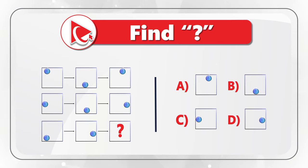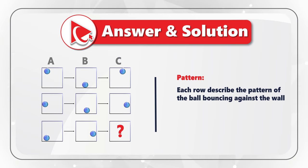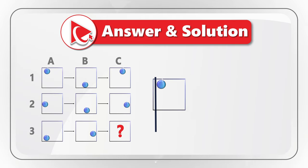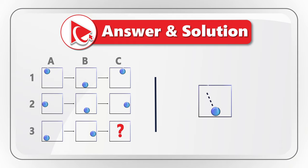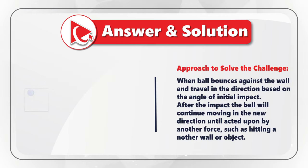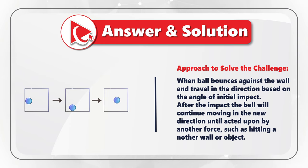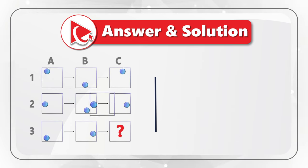To better solve this challenge, let's assign columns and rows to each object in the picture. We will have columns A, B, and C, and rows 1, 2, and 3. As you might have guessed, each row describes the pattern of a ball bouncing against the wall. Starting with object A1, the ball is in the upper left corner and moves downward toward the middle of the bottom section. That is exactly where we see the ball in object B1. After that, the ball bounces and moves upward, as seen in C1. When the ball bounces against the wall, it travels in the direction based on the angle of the initial impact.